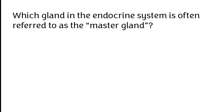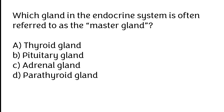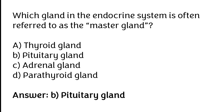Which gland in the endocrine system is often referred to as the master gland? Thyroid gland, Pituitary gland, Adrenal gland, Ferrathyroid gland. The correct answer is Option B. Pituitary gland in the endocrine system is often referred to as the master gland.